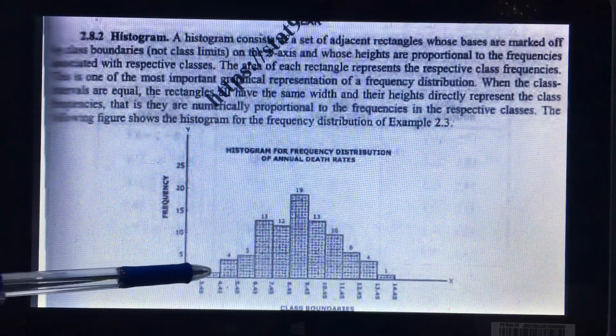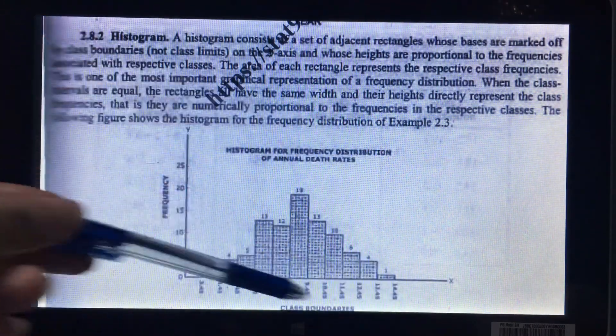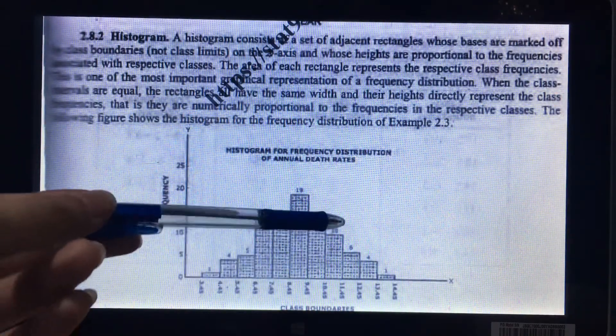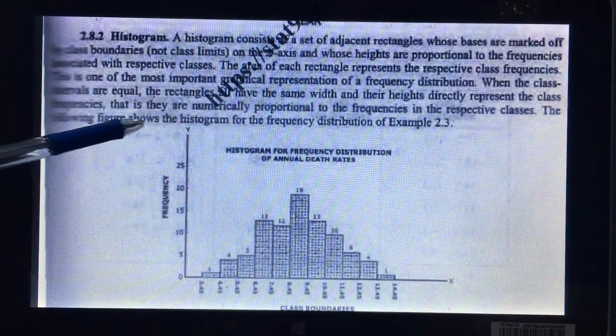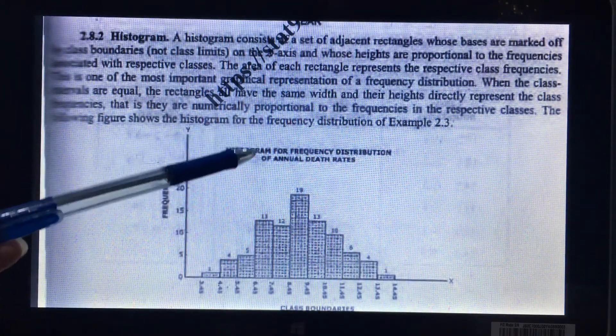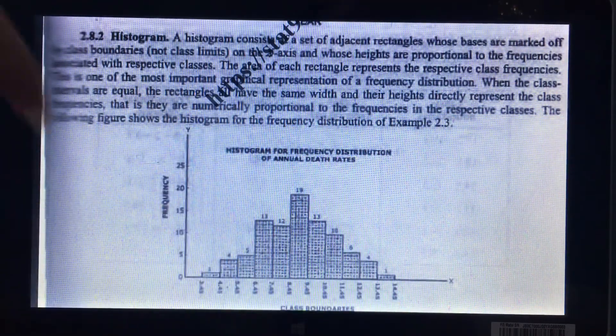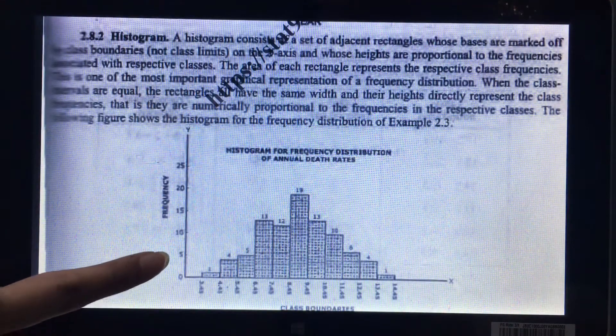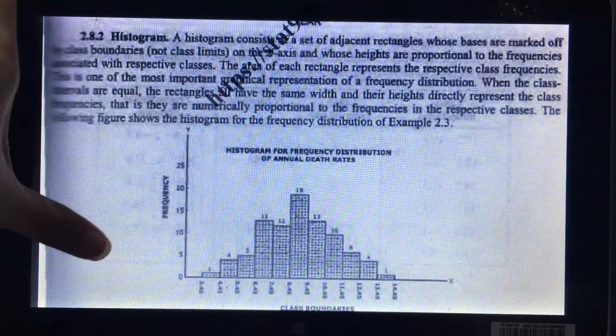It means one rectangle is attached to another rectangle, and you make a histogram like that. These are the lengths representing the frequencies which are given in the questions. Here they are taking the data from example 2.3 and making this histogram. I am taking another example and I am going to show you how to make a histogram of that data.